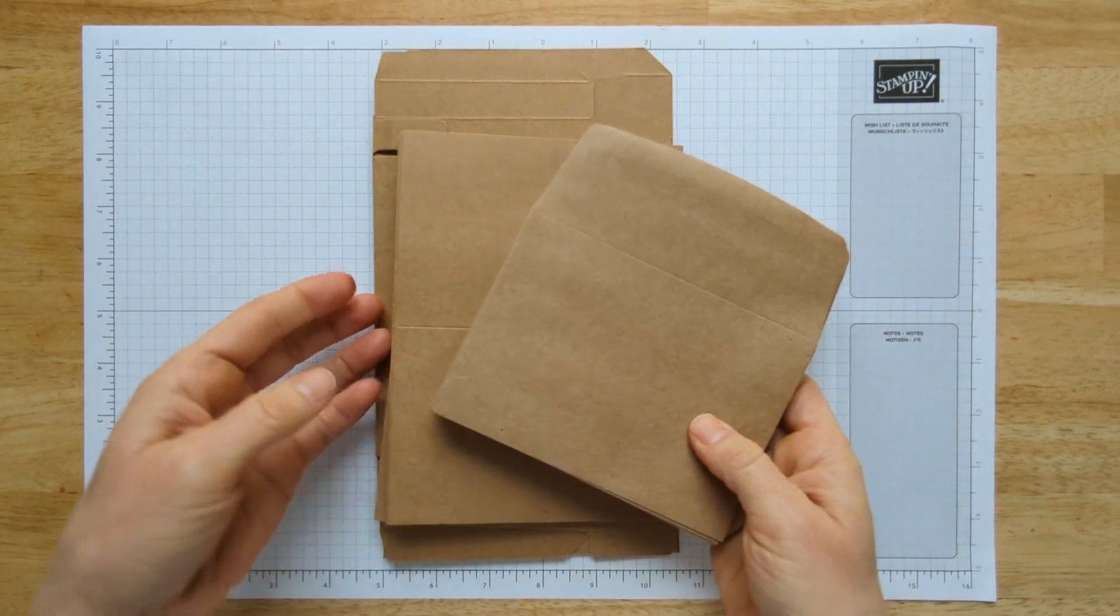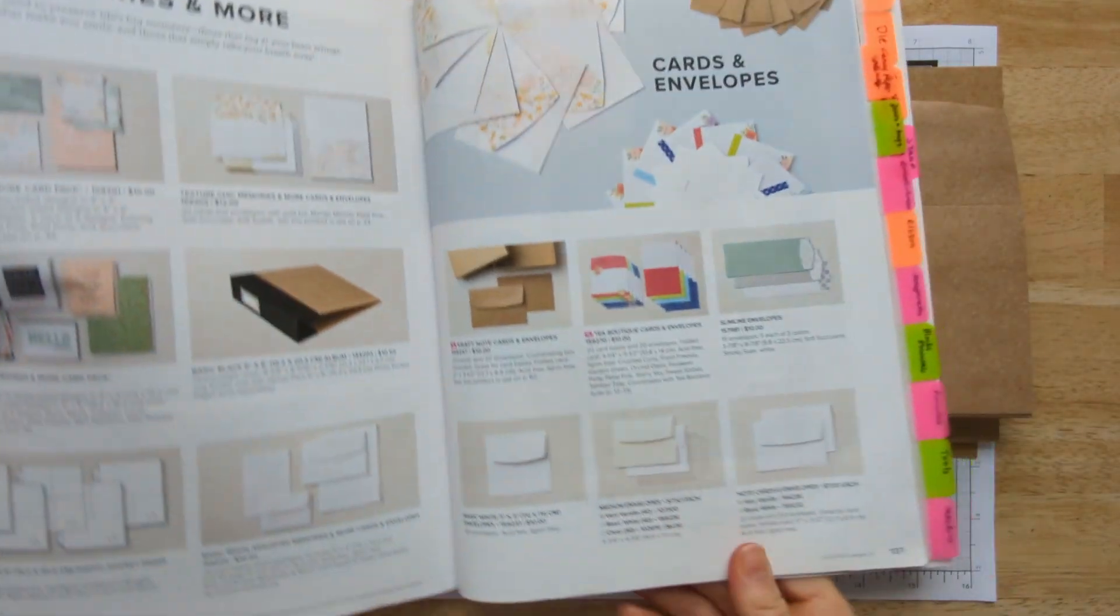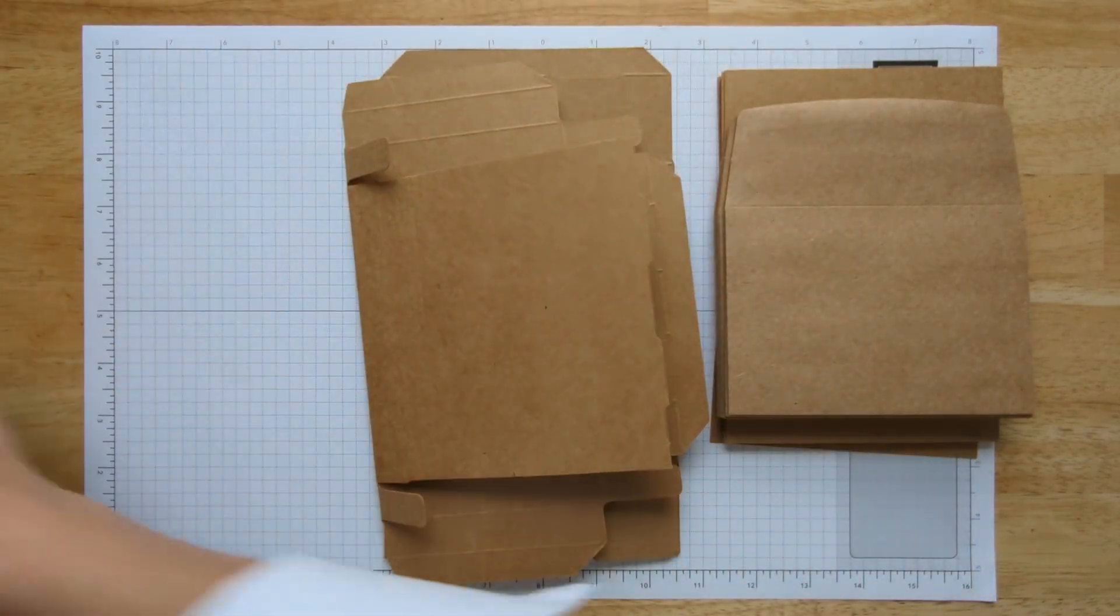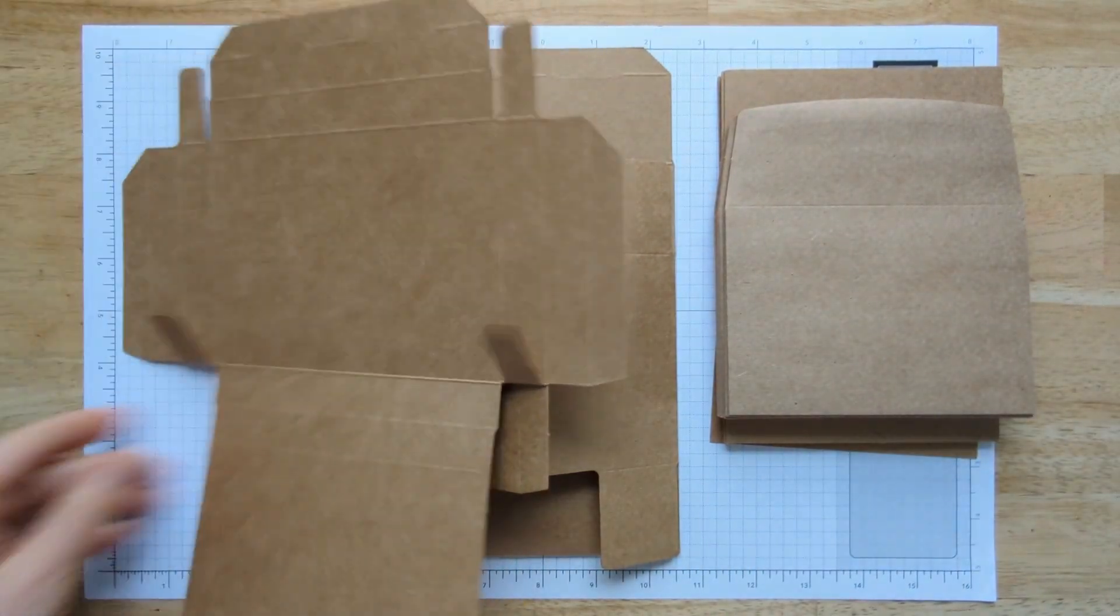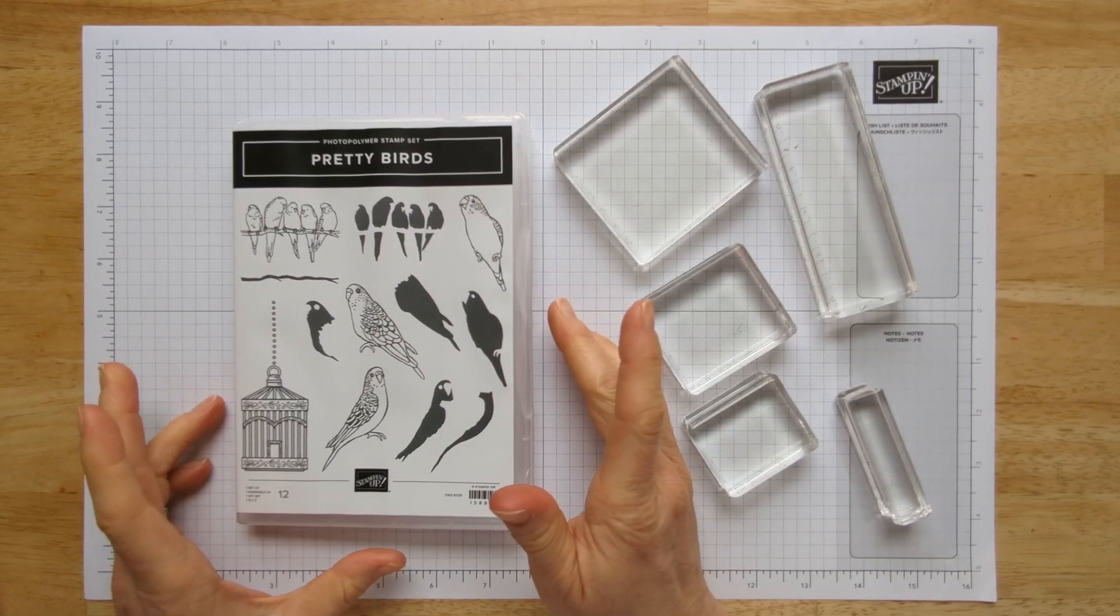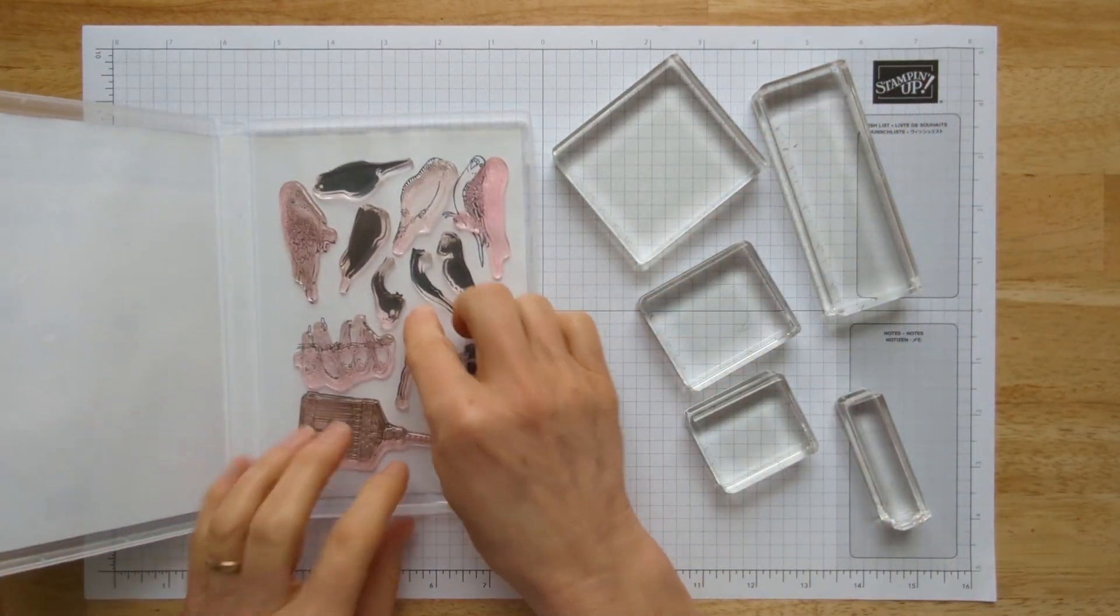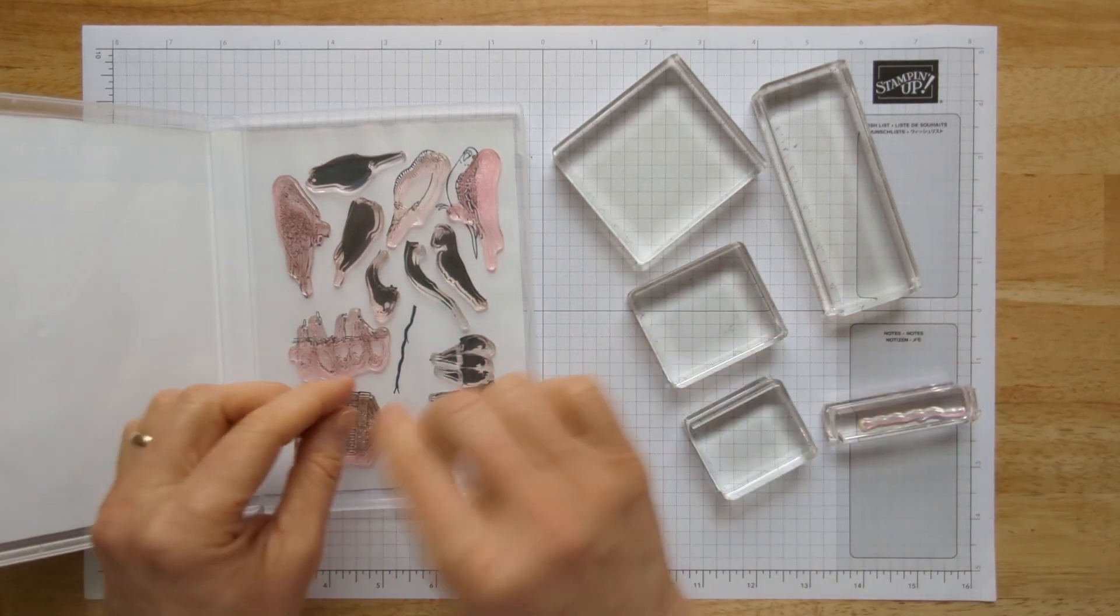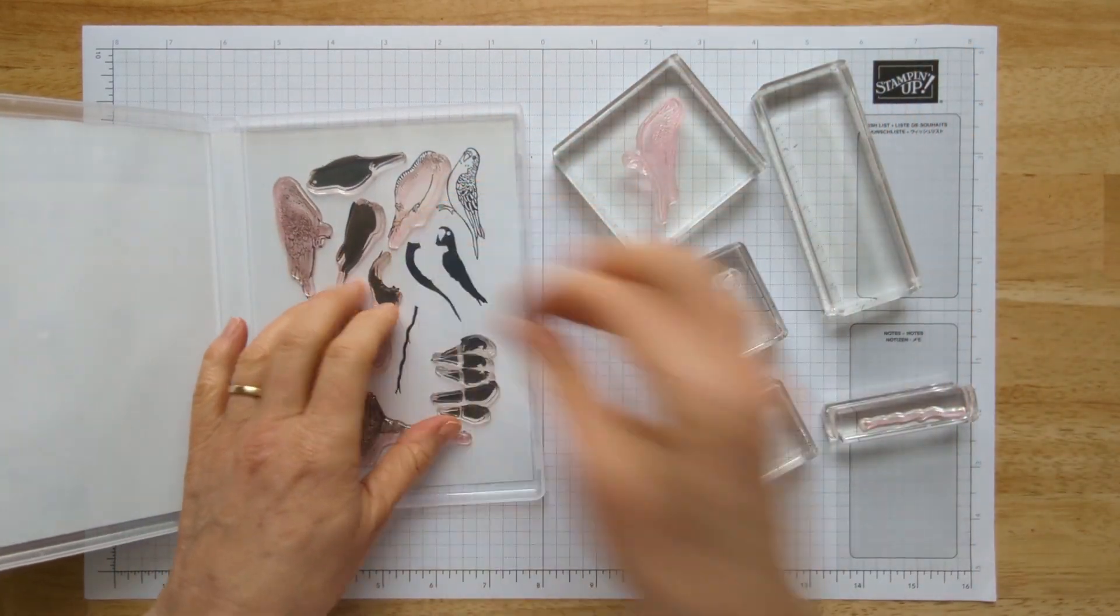One reason why this project is so quick and easy is that I'm going to use the craft note cards and envelopes. This comes in a pack of 20 cards and 20 envelopes. It's on page 137 of the catalog. It's just kind of hidden in here, but this is such a gem and it comes with a box that it all fits in together. After we stamp a couple of these cards, I'm going to show you how to put this box top together.